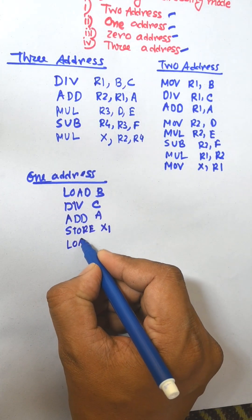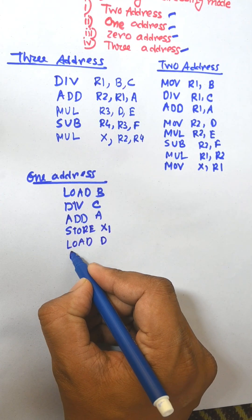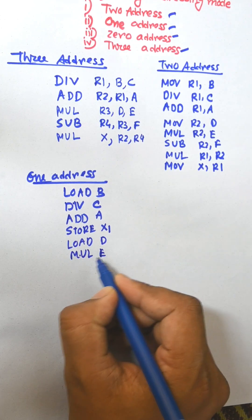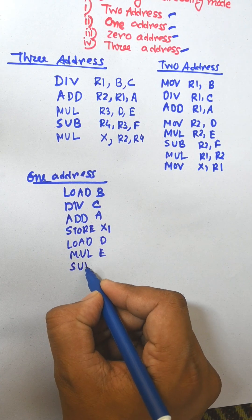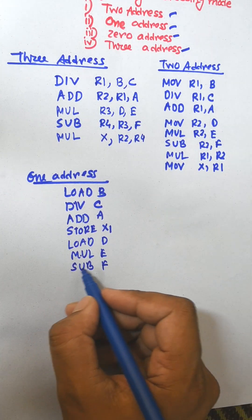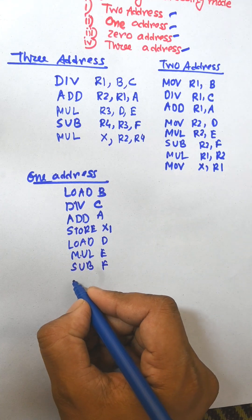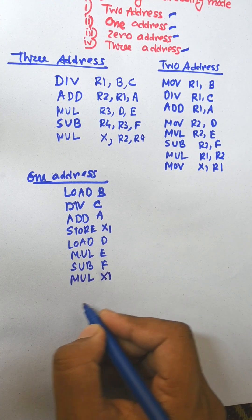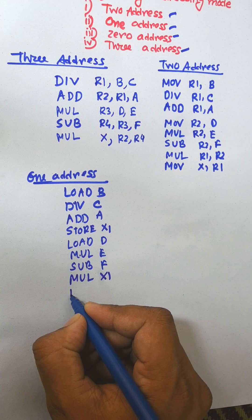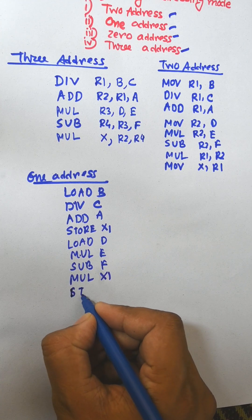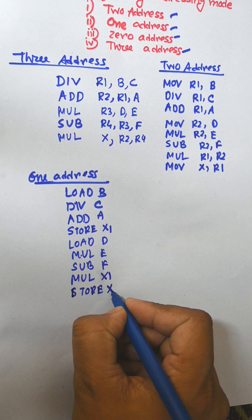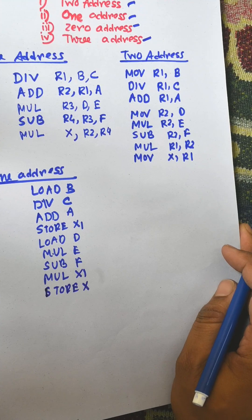Now load D, multiply by E, and subtract F. The result of subtraction we need to multiply with x1, and the final result is stored to x. This is known as one-address instruction format.